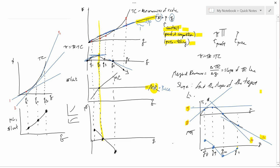Sometimes students ask: why would the firm want to go where marginal profit equals zero? The point is that profit and marginal profit are not the same thing. Profit is maximized right there at Q2, and when profit is maximized, marginal profit equals zero. That's where the firm wants to go. This has been a really long video, but the discussion is all connected, which is why it ended up so long.